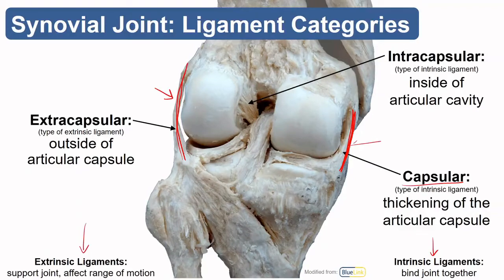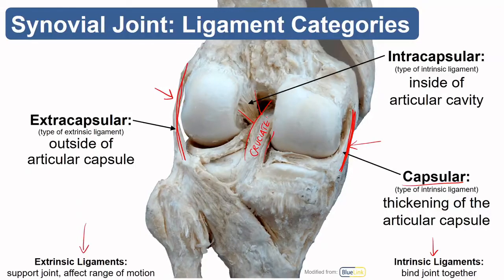There are two collateral ligaments of the knee maintaining stability from either side, and they differ in their relationship with the articular capsule. Intracapsular ligaments are found within the articular cavity inside that capsule. In the knee, the cruciate ligaments — you may have heard of the ACL and PCL — are intracapsular. Collateral ligaments come up frequently in regional anatomy; think of them as running on either side of a joint as supportive ligaments.